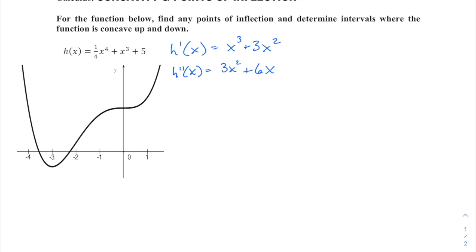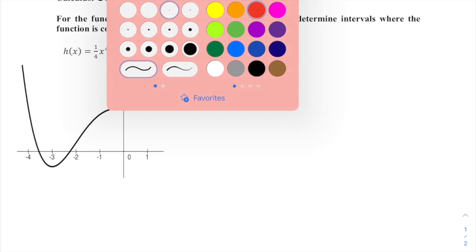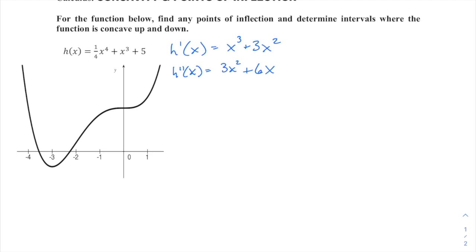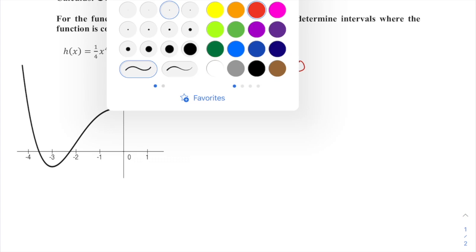Similar to our process for finding critical points to find relative maxes and mins with the first derivative, set the first derivative equal to 0 or undefined. It's essentially replicating that same process but with the second derivative. They don't call them critical points, though. That is strictly affiliated with the first derivative. But it's really the identical process. So this second derivative is never undefined, but where is it equal to 0?